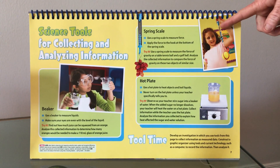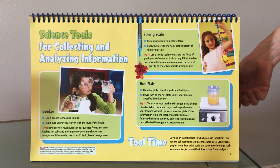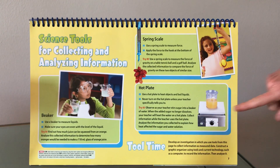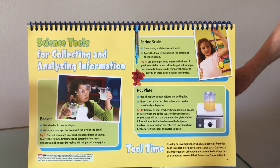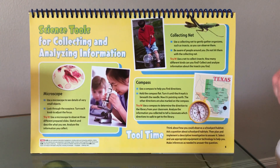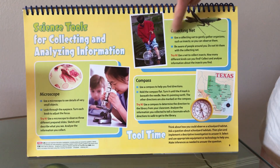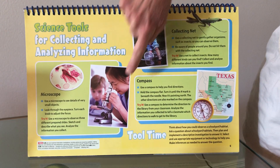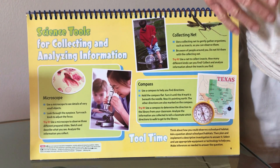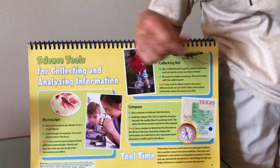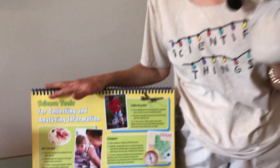Beakers, spring balances, hot plates, collecting nets, microscopes, compasses. We have several examples of these here and we're just going to take a brief tour.